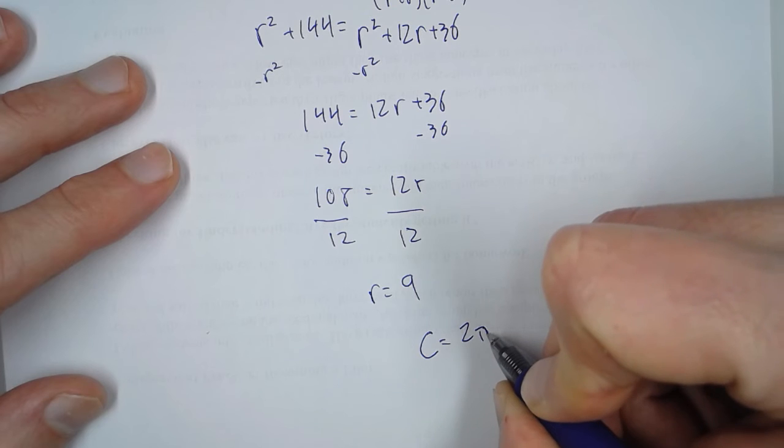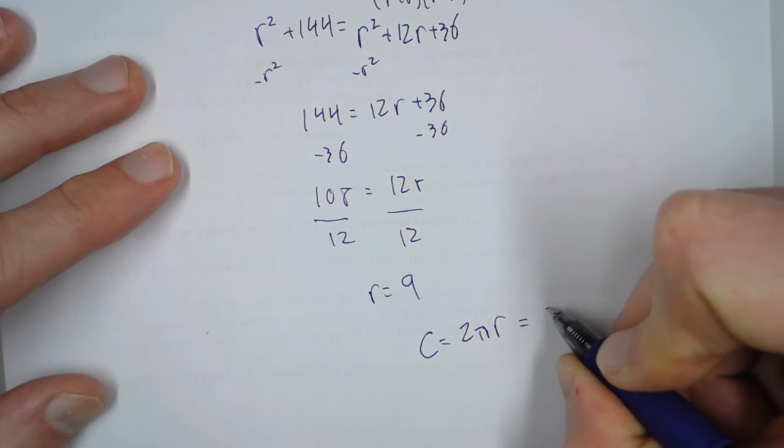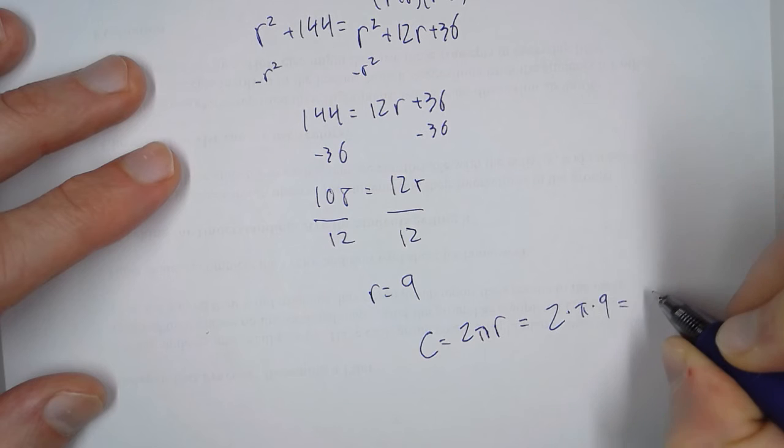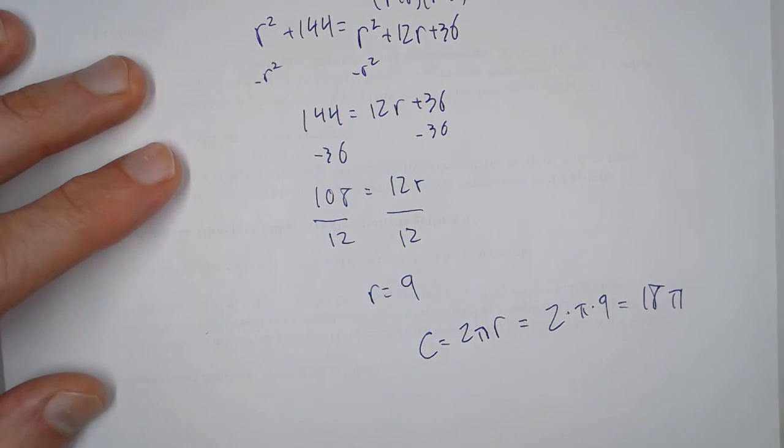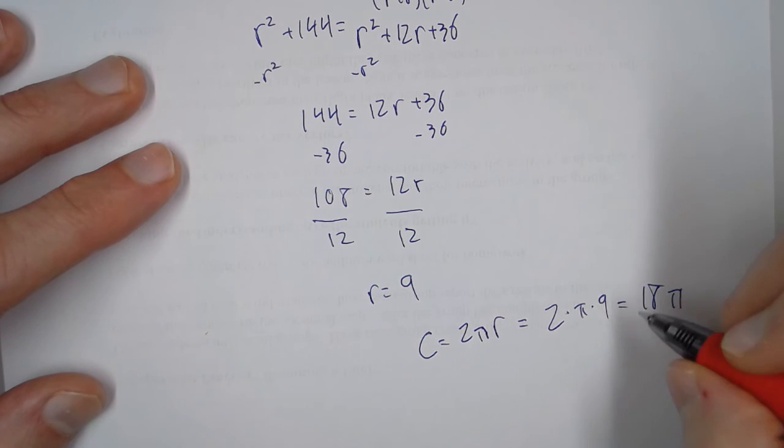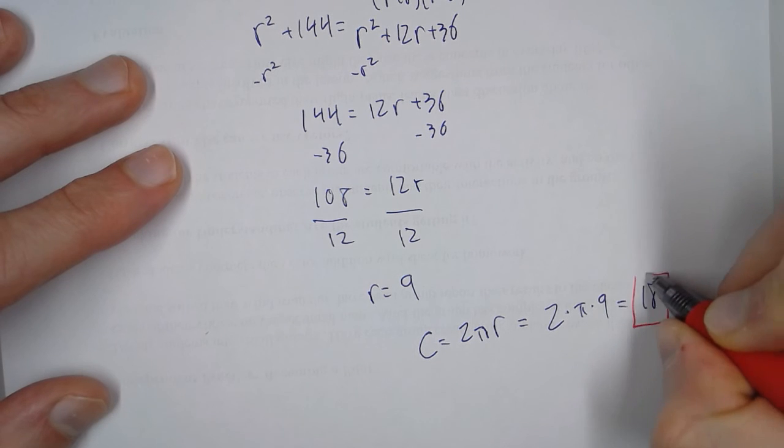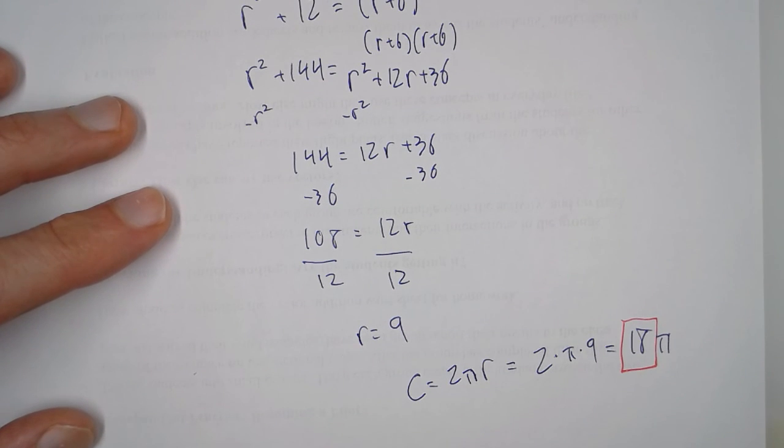So 2 times pi times 9 equals 18 pi. What we're interested in is the coefficient in front of pi, which is 18, and we're done.